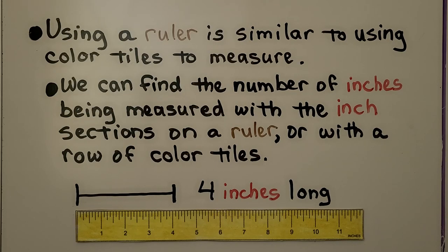So we're going to use 1 inch color tiles and these need to be cut out so they're separate. Using a ruler is similar to using color tiles to measure. We can find the number of inches being measured with the inch sections. Here's an inch section. Here's another inch section. We can find those on a ruler or with a row of color tiles.